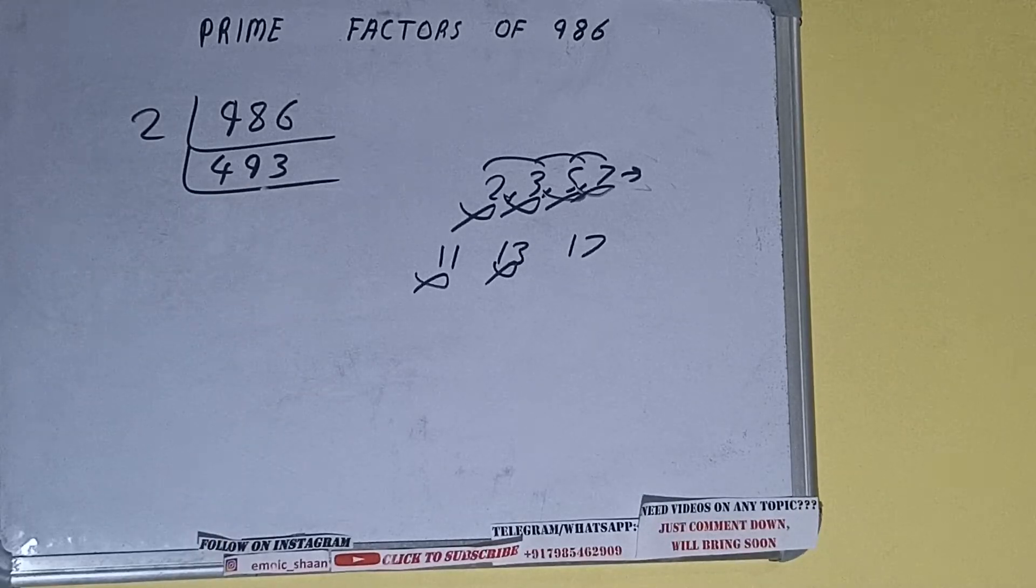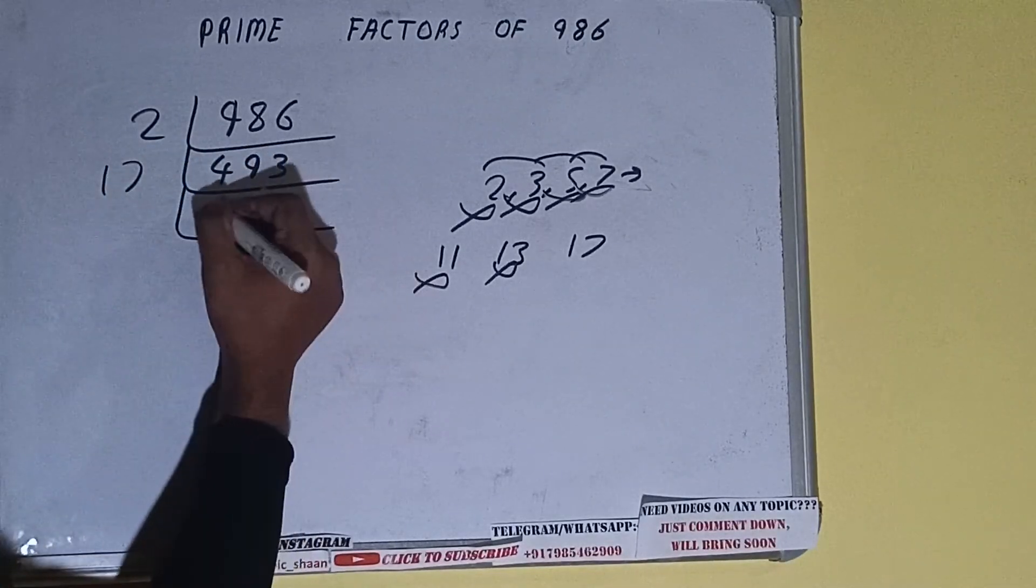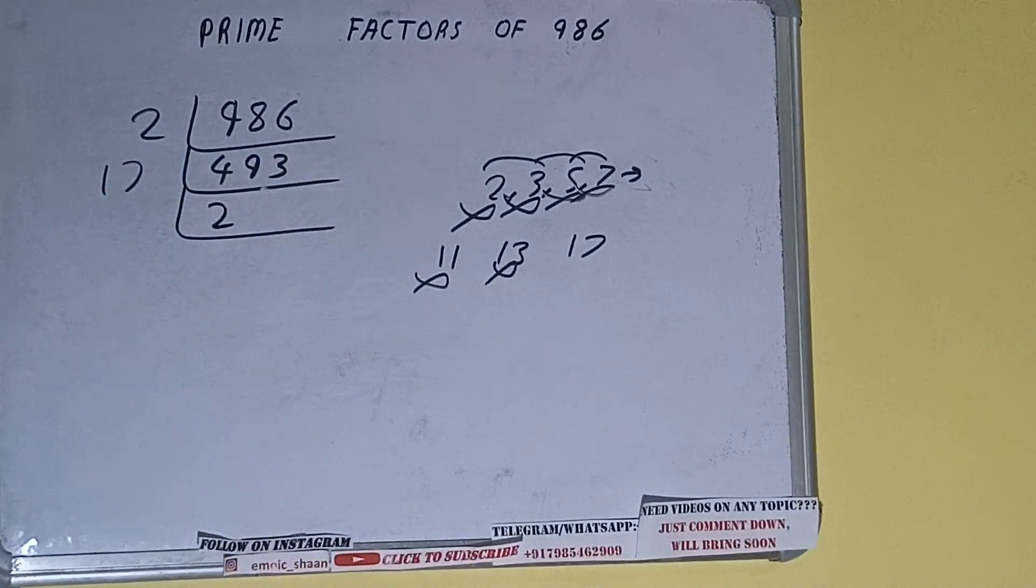Seventeen nines are one fifty-three. So it is divisible by seventeen. So divide it: seventeen twos are thirty-four, seventeen nines are one fifty-three. We'll be having twenty-nine. And twenty-nine is not divisible by seventeen.